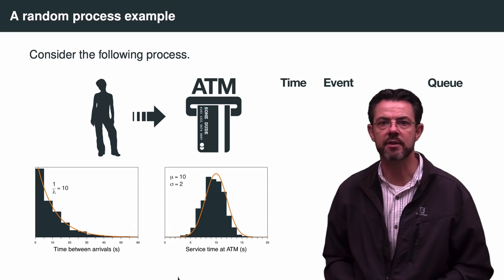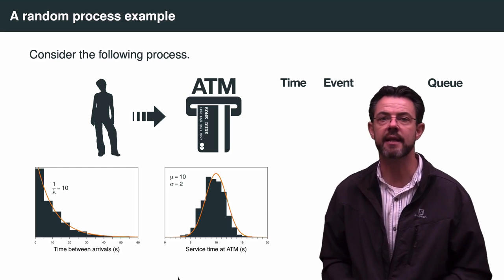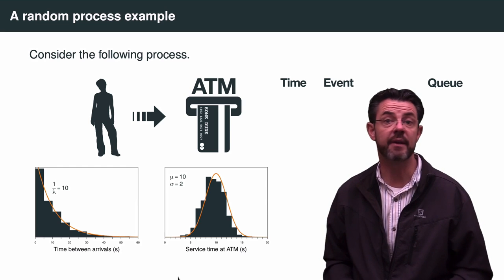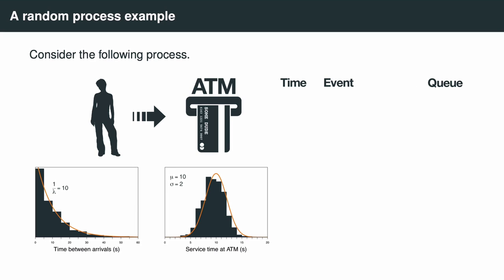As I describe this process, we're going to track the absolute timestamp, explain what event happens at that point in time, and keep track of the number of people in the queue at that particular time. When the simulation model initiates, it does so with an empty discrete event list. At time 0, it first samples from the exponential distribution to determine when the first person will arrive. Let's say the first value drawn is 4 — it will then create the first event: Person A arriving at time 4, with the queue tally at 0.